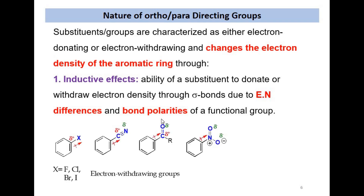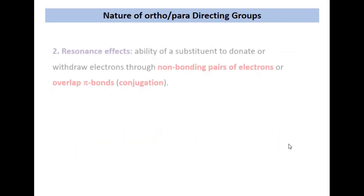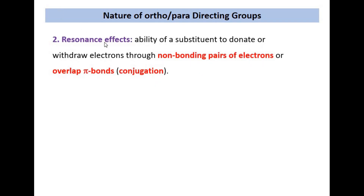Some electron-withdrawing groups include the halogens — fluorine and bromine — as well as the nitrile group, the carbonyl group, and the nitro group. The electron-donating group is the methyl group of toluene, which has an electron-donating inductive effect. Another effect important in describing the nature of ortho and para directing groups is the resonance effect. The resonance effect is very important in describing ortho and para directing behavior, and its influence is somewhat larger as compared to the inductive effect.